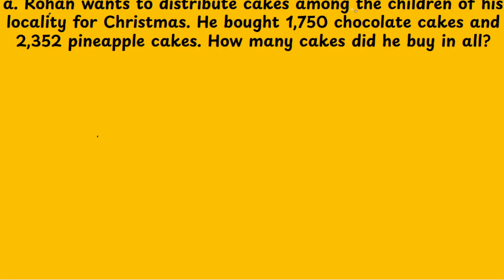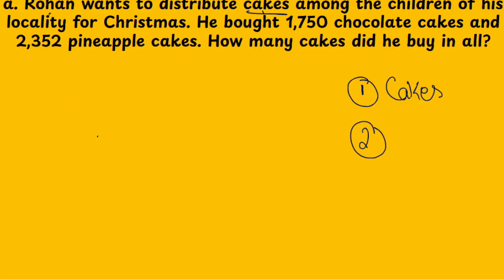The first step we need to do in every word problem is analyze the story — what is the story about? It is about cakes. The second step is to underline the numbers.